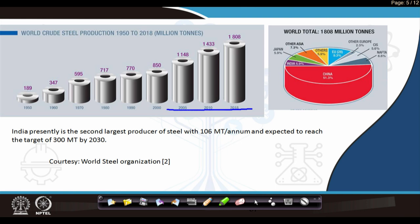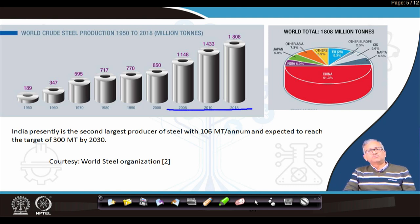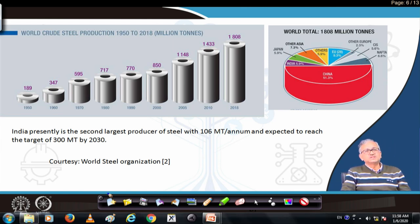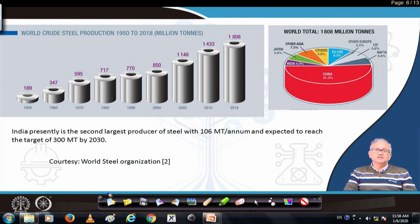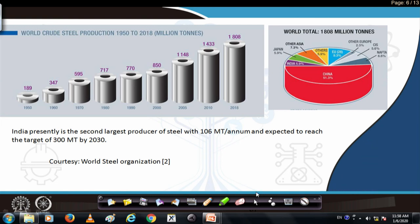Now let us look at the world steel production scenario. From 1950 to today, production grew from 189 million tons to 1,808 million tons. China produces around 50% of world steel. India is producing around 106 million tons while Japan produces 104 million tons, so India has just overtaken Japan to become the second largest producer of steel.